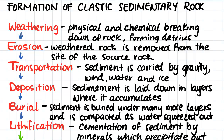Erosion is the removal of this weathered rock from the site of the source rock. The detritus is then transported by gravity, wind, water, or ice, and it is then deposited or laid down in layers, where it is able to accumulate. This sediment can then be buried under many more layers of sediment and is compacted. This compaction squeezes all the water out of the sediment.